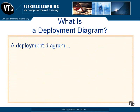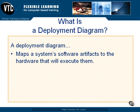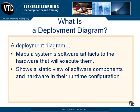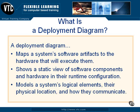A deployment diagram maps a system's software artifacts to the hardware that will execute those artifacts. It shows a static view of software components and the hardware nodes on which they execute in their runtime configuration. Deployment diagrams model a system's logical elements, where those elements are located physically, and how they communicate with each other.